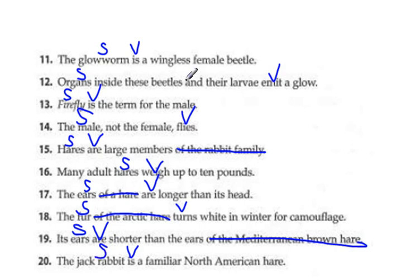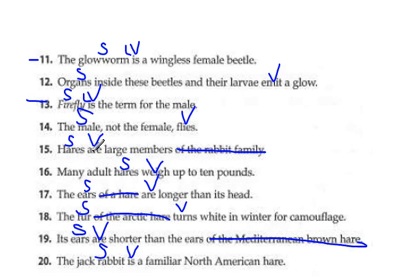All right, so now let's find our linking verbs. Number 11, 'is' — is linking. Number 12, 'emit' — is not. 13, 'is' — is linking. 14, 'flies' — is not. 15, 'are' — is linking. 16, 'weigh' — is not.